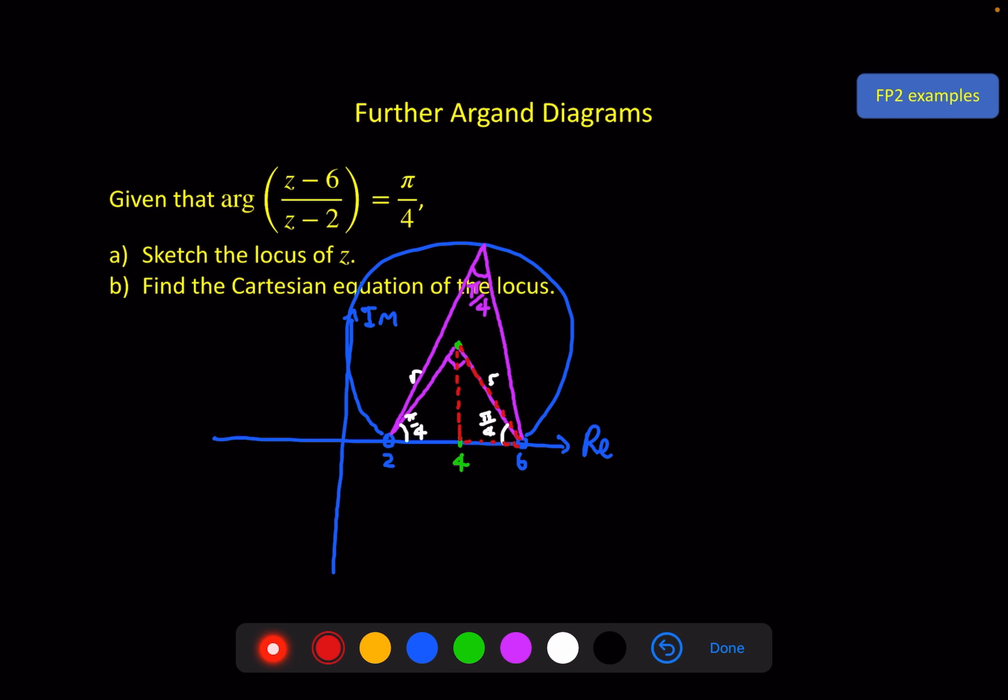And again, my diagram hasn't worked out very well. But cutting this in half means this must be π/4 as well, because there's another right angle here, which means we have another isosceles triangle, and whatever distance this is, which we know to be 2, must be the same as this distance, which in turn tells us that the radius squared must be 2² + 2². So it must be 2√2. In the process of doing that, of course, we've also found the coordinates of the center point, because we can see it's two units off the real axis, which puts this at (4, 2).